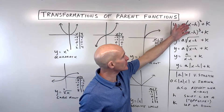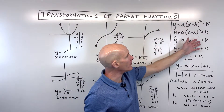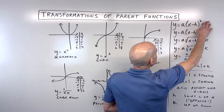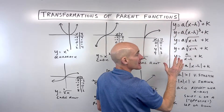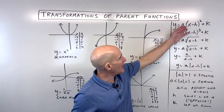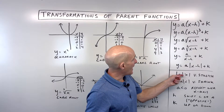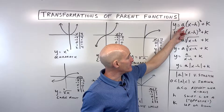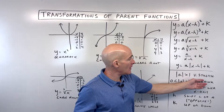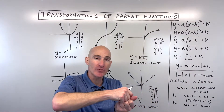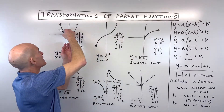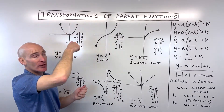Now we're going to work with transformations in the form a·f(x - h) + k. If you cover up H, K, and A, you're left with just x² — that's the parent function. The absolute value of A tells us about stretching or shrinking: if |A| > 1 (like 2, 3, or 4), that's a vertical stretch, multiplying all the y values by A and making the graph go up faster, like pulling it in the y direction.